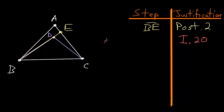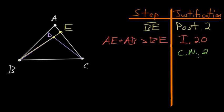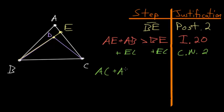So let's write that down: AE plus AB is bigger than side BE. We can use Common Notion 2, which says that if we add equals to equals then the wholes will be equal, and we'll use this to add EC to each side of this inequality. Notice that AE plus EC is just equal to AC.